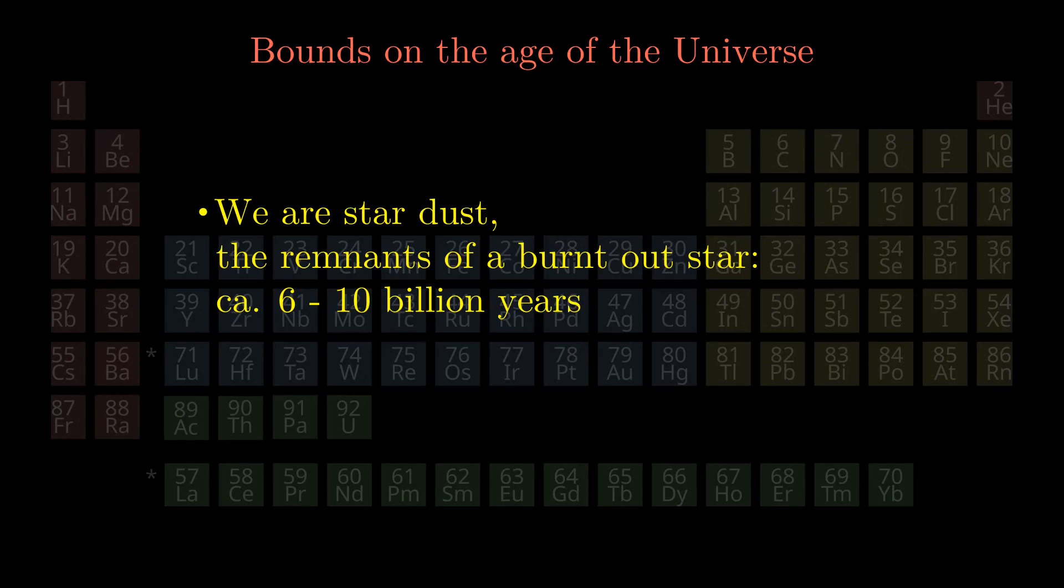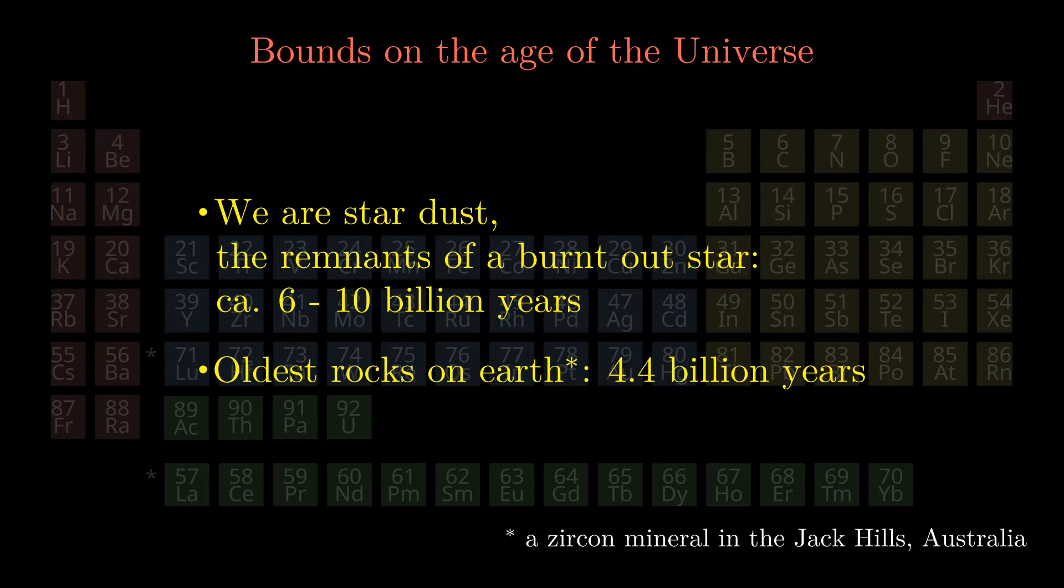Moreover, the oldest rocks that have been found on earth are 4 billion years old. Therefore, our universe should be older than the oldest rocks on earth and the lifetime of our reactor star together. A reasonable lower bound for the age of our universe is about 10 billion years.